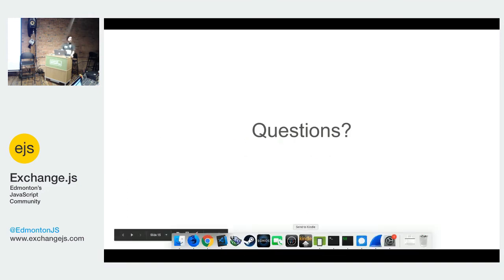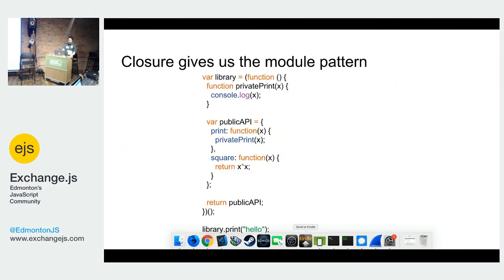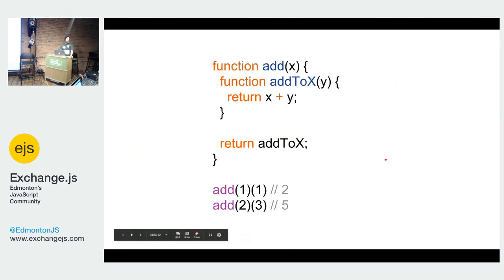Can you go back to the slide? One more? Yeah. So when you return addToX, return a function, does it mean that it also returns the scope of the function? Yeah. Yeah, yeah, yeah. It's basically returning this function object and the scope of that function also. Remember that the function actually is closure. Yeah.